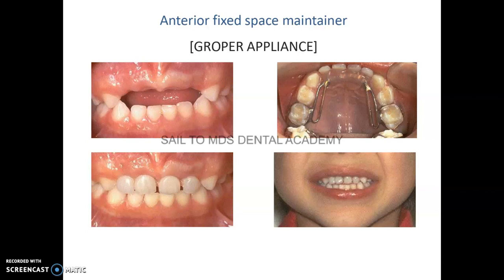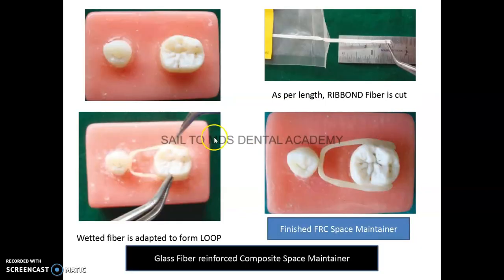For anterior fixed space maintainers: when we extract an anterior tooth, we do not routinely give a space maintainer. However, anterior teeth serve two functions in children — aesthetics and speech development. The tongue contacts anterior teeth for linguodental sounds, so early loss causes speech difficulties. For such patients, we give the Groper appliance.